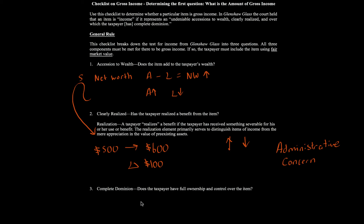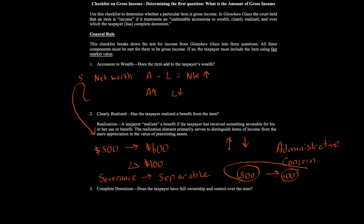In addition to the value question, realization also requires what we call severance. Severance is the idea that the item must be separable from that which provides the income — distinct and separate, whether physically or legally, from the original item that produced the net worth increase. Going back to our stock example, where the value has gone from $500 to $600, can that $100 be actually separated out? No. The stock is all one item, so there is no legal nor physical severance in that example.